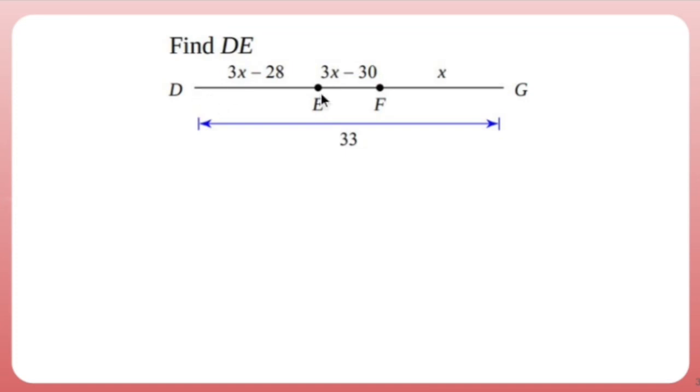Find DE, which is this chunk right here. This uses the segment addition postulate, which says if I add each segment, I get this whole thing. Since I'm given information about each little segment here, let's just do that.